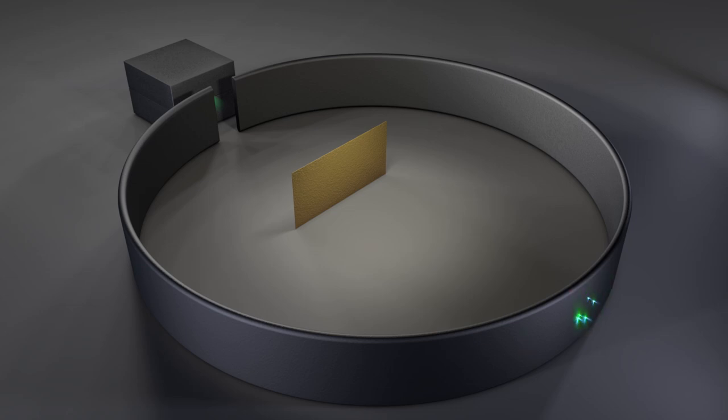Voici ce qu'il a observé. Presque toutes les particules ont passé à travers la feuille d'or et frappé l'écran de l'autre côté. Un faible taux de particules ont été légèrement déviées d'un côté ou de l'autre. Mais la grande surprise était lorsque quelques-unes des particules ont rebondi vers l'arrière comme si elles avaient frappé quelque chose de dur et fixe. Le modèle de la brioche aux raisins secs n'aurait pas prédit ce dernier résultat. Mais quel modèle l'aurait prédit?